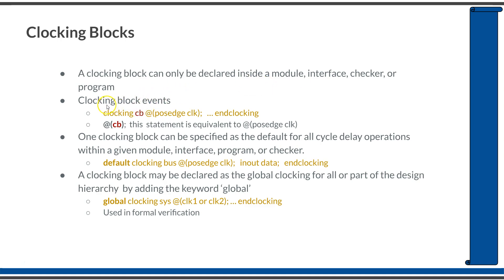If you want to wait for a clocking event within a clocking block, you can just use the clocking block name — the clocking block name itself serves as an event. So if you have defined a clocking block named 'cb' which is sensitive to the positive edge of clock, and you want to wait for that event, '@(posedge clk)' is equivalent to just '@cb'. You will see this quite commonly in testbenches where clocking blocks are used.